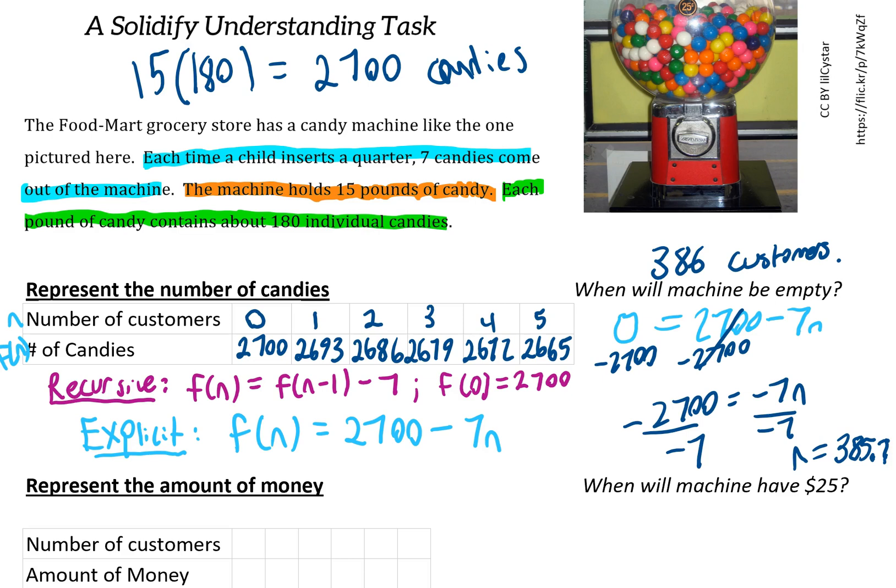The important idea here, going back to the purpose, is that this is the first scenario where our common difference was negative. The common difference in this problem is -7, and we see that represented in both our recursive formula and our explicit rule.